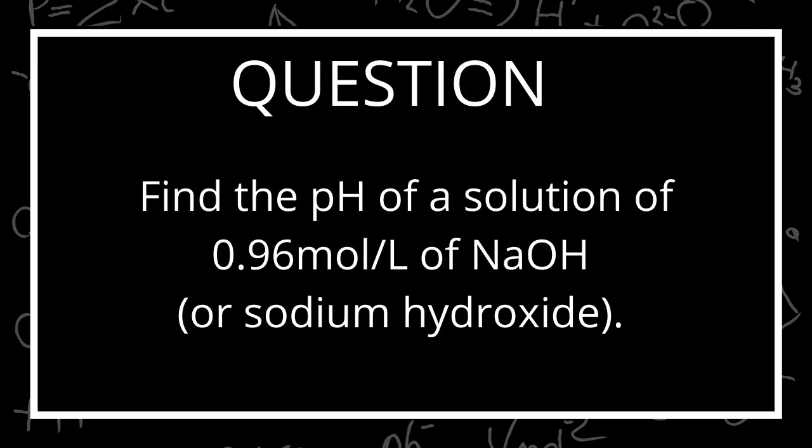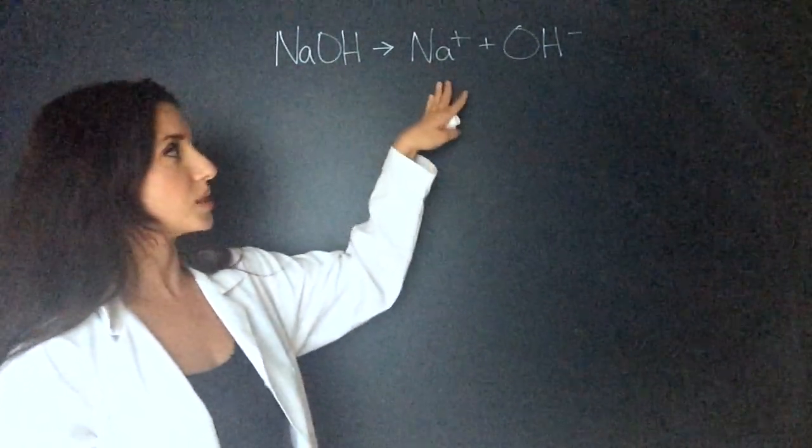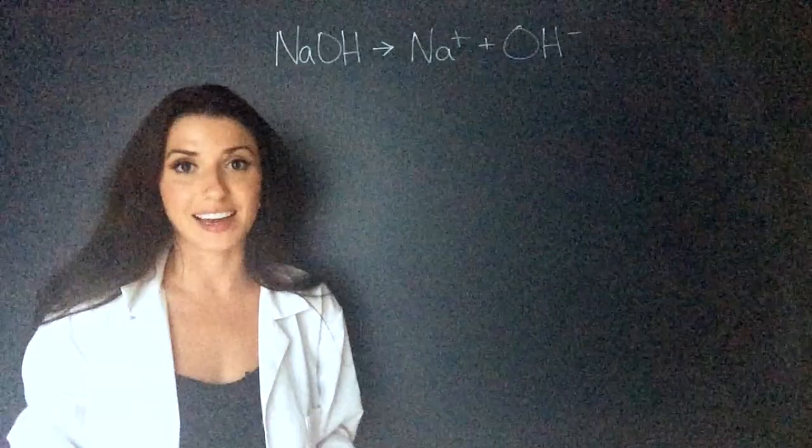The next question says, find the pH of a solution of 0.96 moles per liter of NaOH or sodium hydroxide. This one is tough because at the end of the day, we have to find pH, but we're given a solution that has a base.